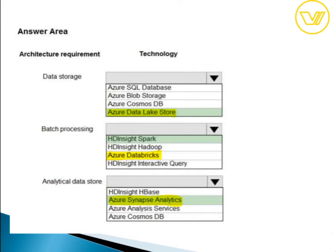For question nineteen, pay attention to what's highlighted in yellow versus green. Most websites incorrectly list HDInsight for batch processing, but the correct answer is Azure Databricks. The correct mapping is: data storage — Azure Data Lake Storage; batch processing — Azure Databricks; analytical data store — Azure Synapse Analytics (formerly Azure SQL Data Warehouse, renamed after Microsoft acquired the company).